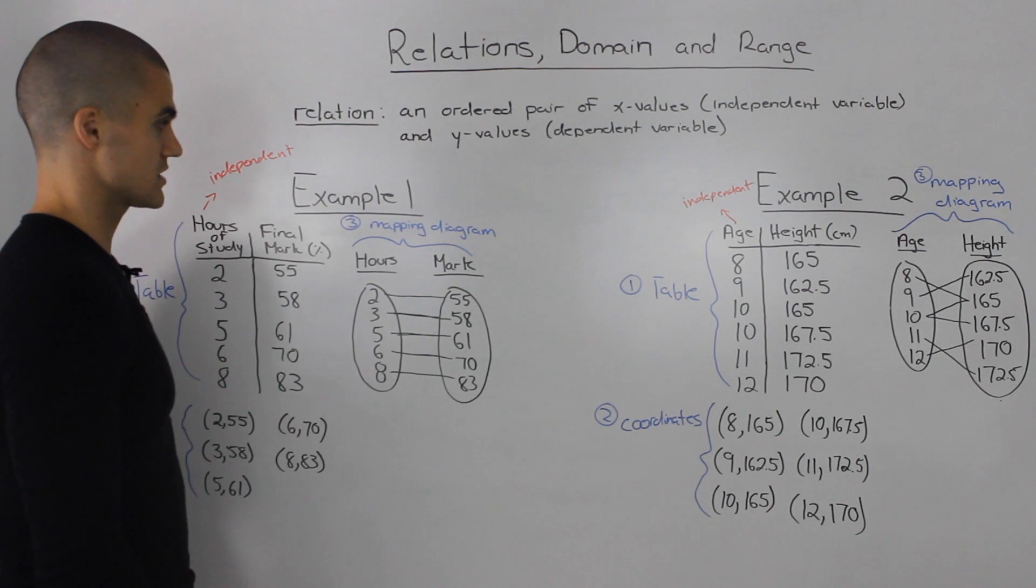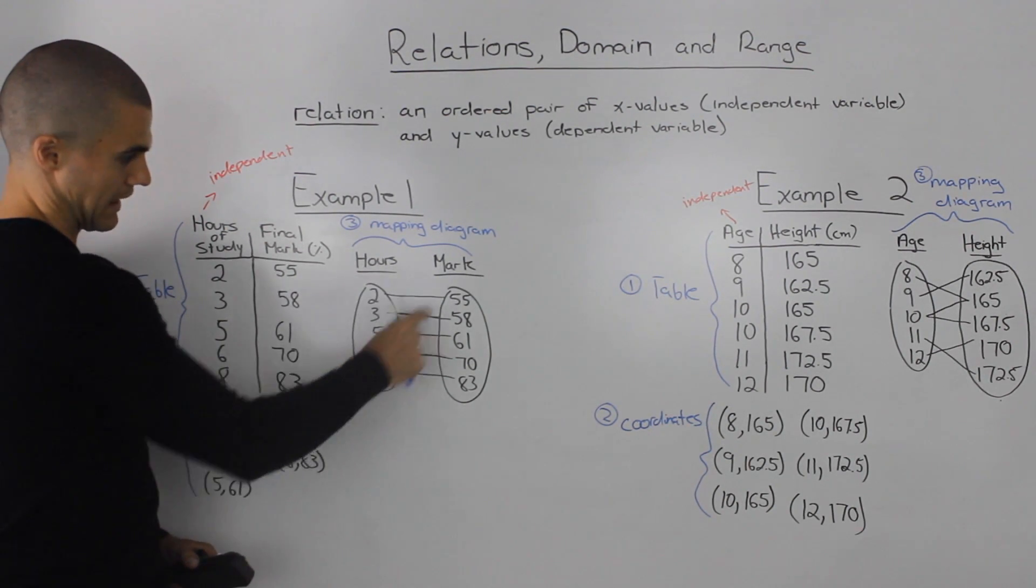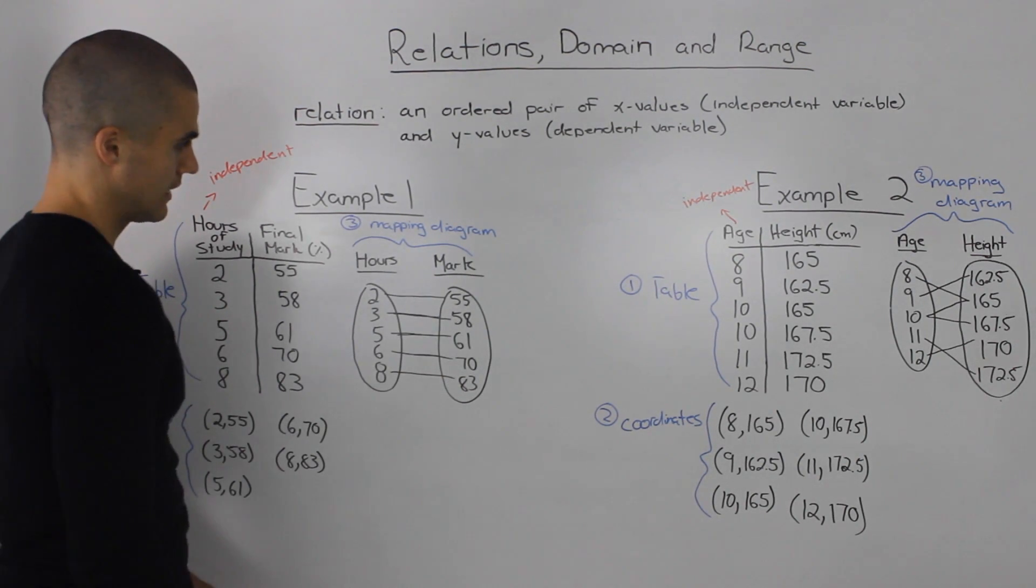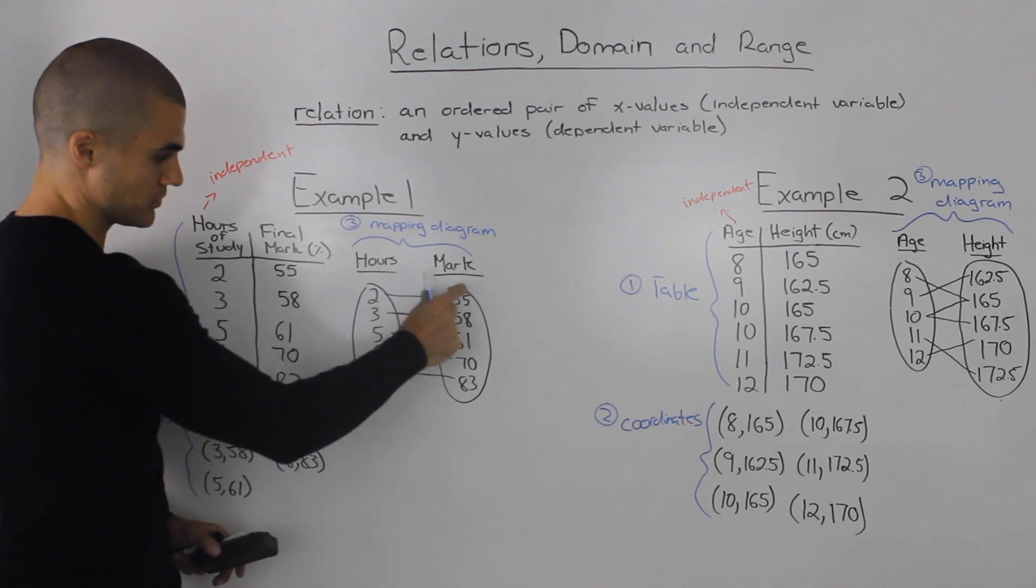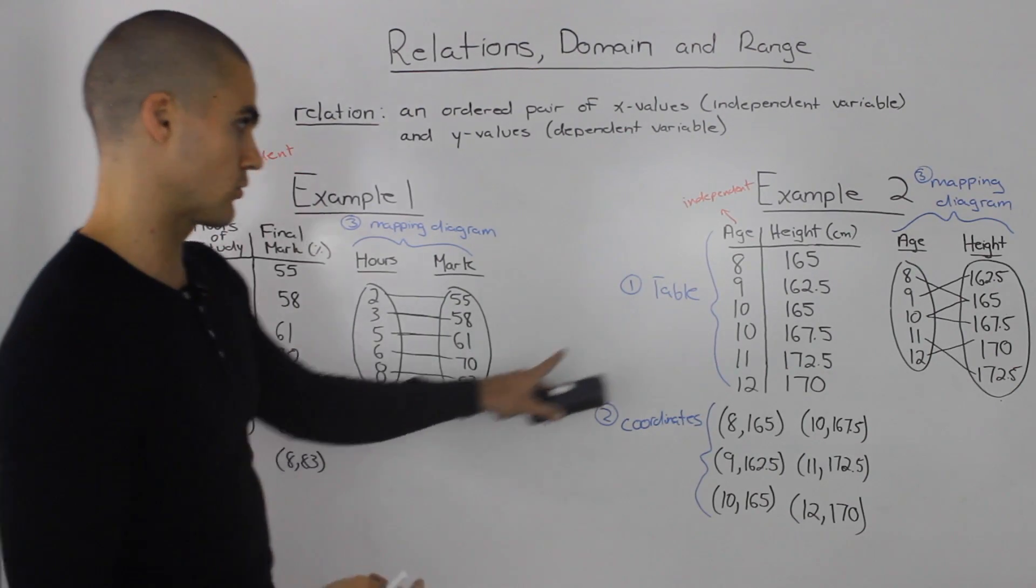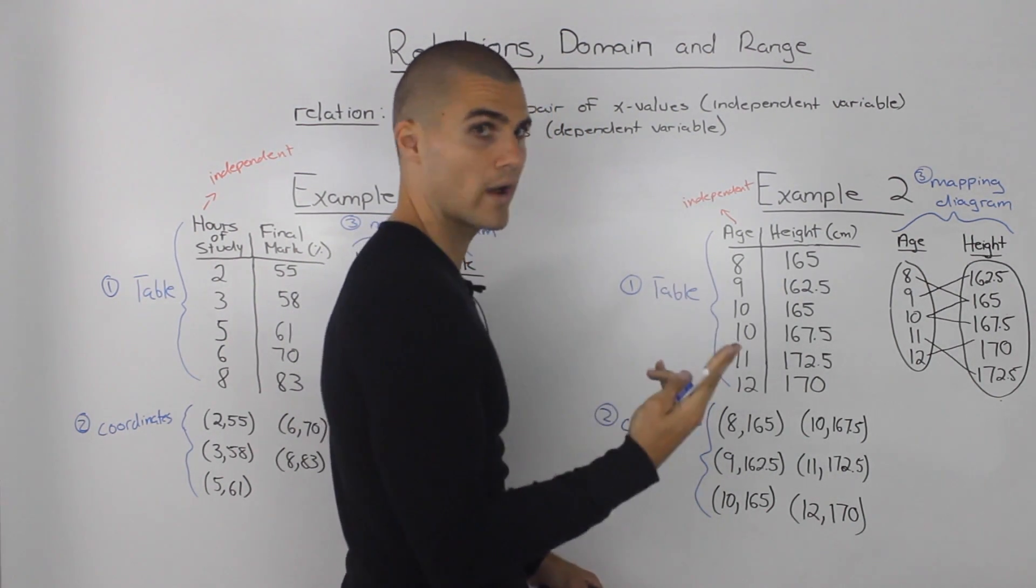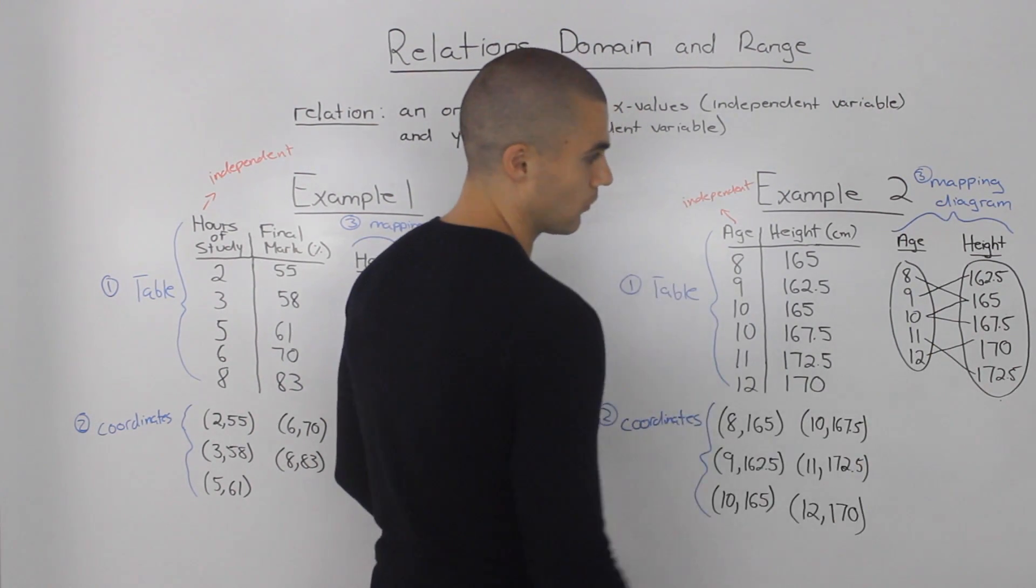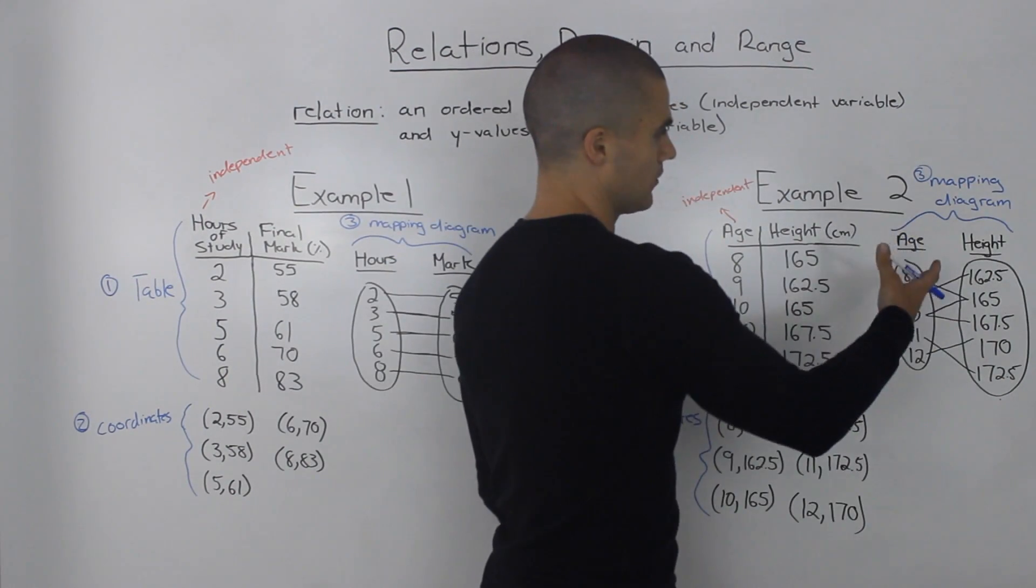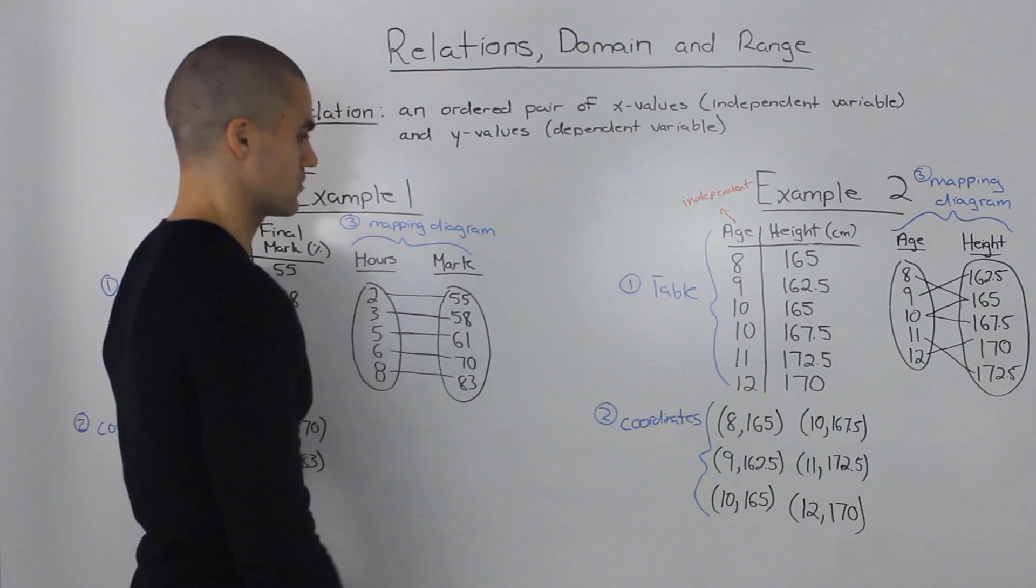Now a third way to show these relations is through something called a mapping diagram. A mapping diagram is very simple. You just list out the independent and dependent variables in these boxes, and then you match them up—the 2 with the 55, the 3 with the 58, etc. The thing to remember about mapping diagrams is that when you put your variables in these boxes, they have to be in order and you only list them out once. Notice how this 10 here, this independent variable, appears twice. But when we put it in the mapping diagram, we only put it once, but we match it to two different dependent variables of 165 and 167.5.